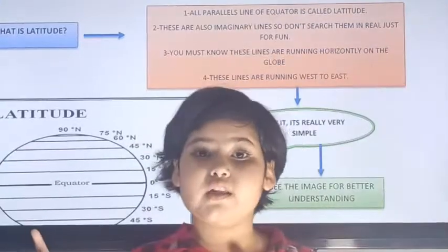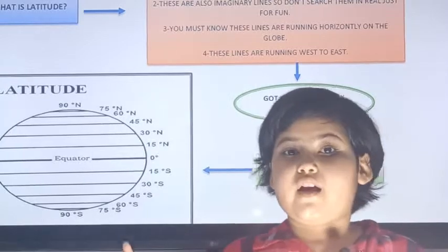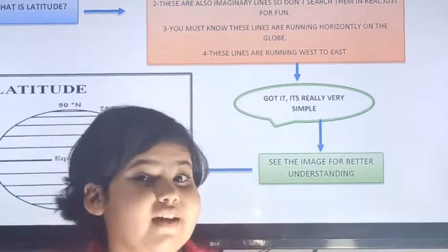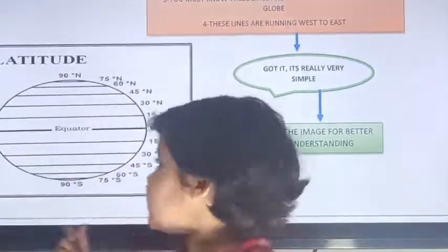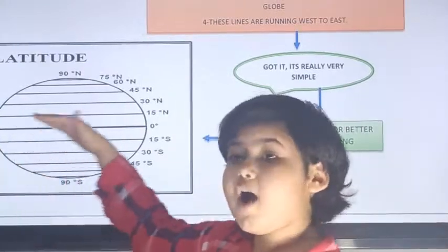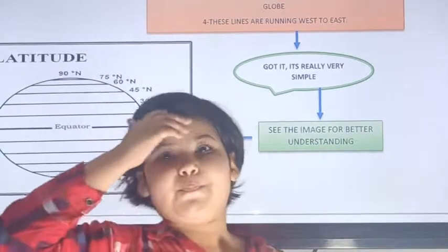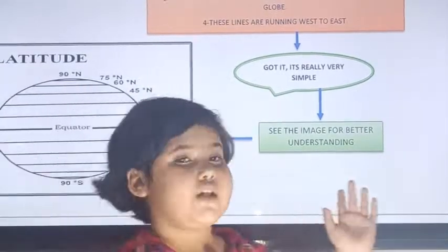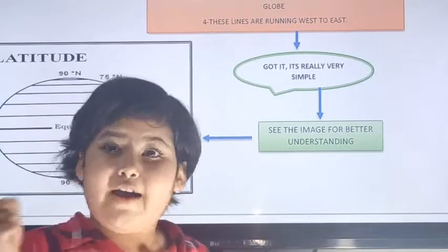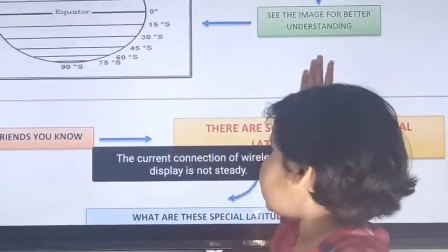These latitude lines are horizontal because they run from west to east. You can see in the image that all these lines are horizontal and come from west to east.